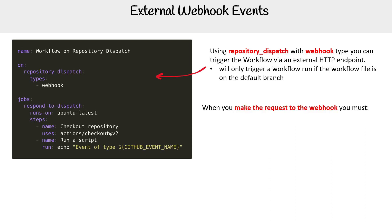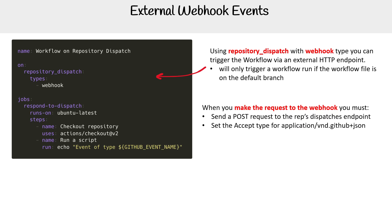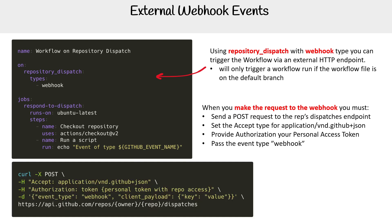When you make the request to the webhook, you must send a POST request, set the accept type to application/vnd.github+json, provide authorization with your personal access token, and pass the event type as webhook. Here's an example of a curl command, and hopefully we can simulate this using curl and get it to work.